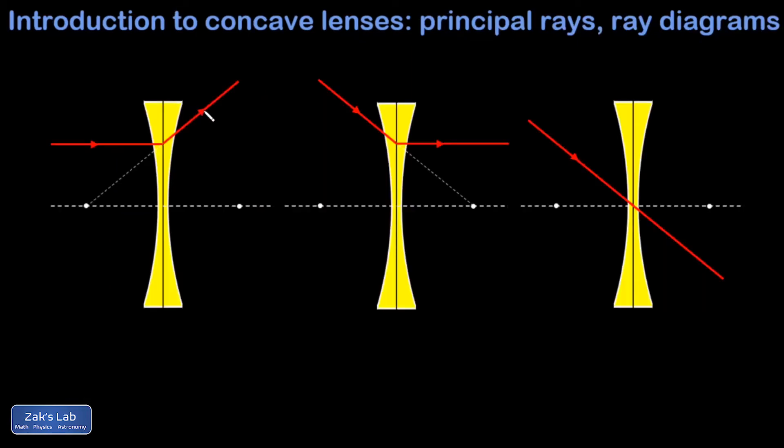When we study lenses, we usually want to find the image formed as light from an object passes through the lens. We can use a ray diagram to draw the process. We focus on three principal rays that refract in very simple ways through the lens. First, a ray coming into the lens parallel to the principal axis refracts away from the principal axis so that it could be traced back to the focus on the near side.